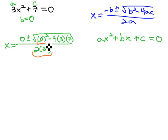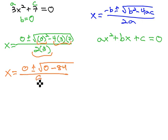Doing our multiplication and exponents then, we end up with x is equal to 0, plus or minus the square root of 0 squared, which is 0, minus 4 times 3 times 7, which is 84, all over 2 times 3, which is 6.